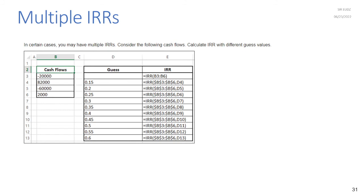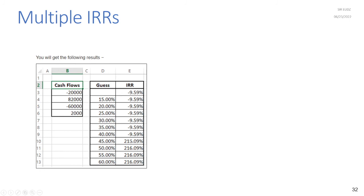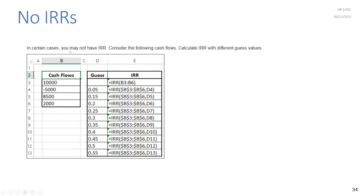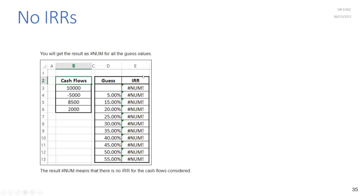In certain cases you may have multiple IRRs. With different guess values, you may get different IRR results — for example, 9.59% and 216.09%. You can verify these by calculating NPV at both rates, which will equal zero in each case. In other cases there may be no IRR at all — the IRR function will return a #NUM error for all guess values, meaning no IRR exists for those cash flows.